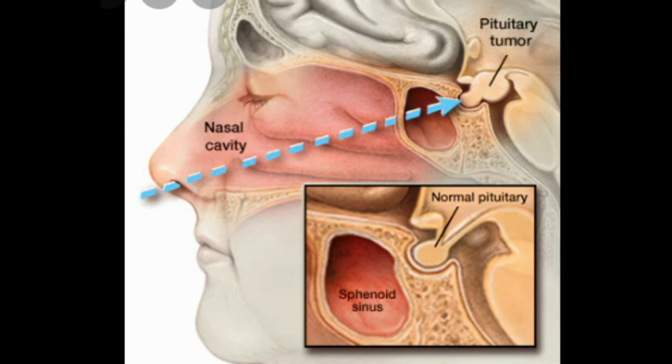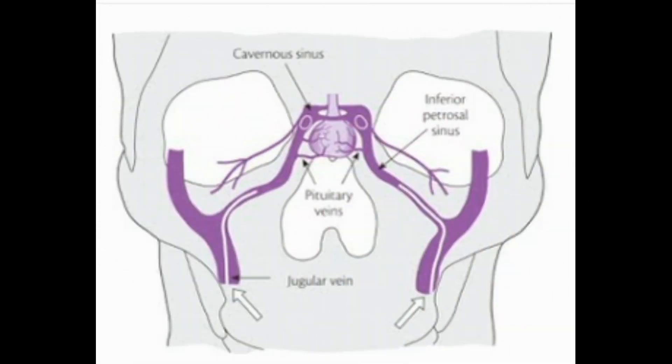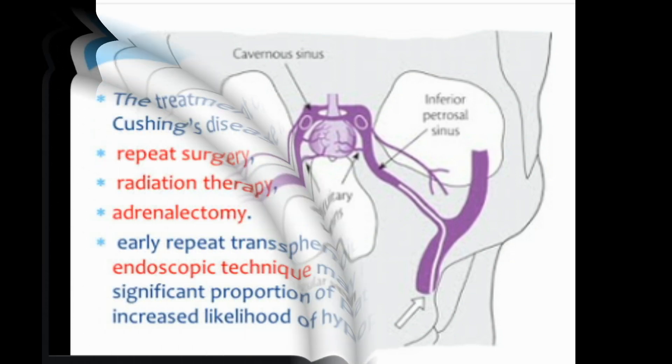Petrosal sinus sampling is a test used to distinguish the source of ACTH secretion and should only be performed after the diagnosis of Cushing's syndrome has been confirmed. ACTH and other pituitary hormones enter the bloodstream through veins called the inferior petrosal sinuses. A catheter is placed in both veins simultaneously, and blood is sampled for ACTH before and after administration of corticotropin releasing hormone (CRH), at two, five, and ten minute intervals. When performed correctly, this test provides an estimated 95 to 98 percent diagnostic accuracy rate.